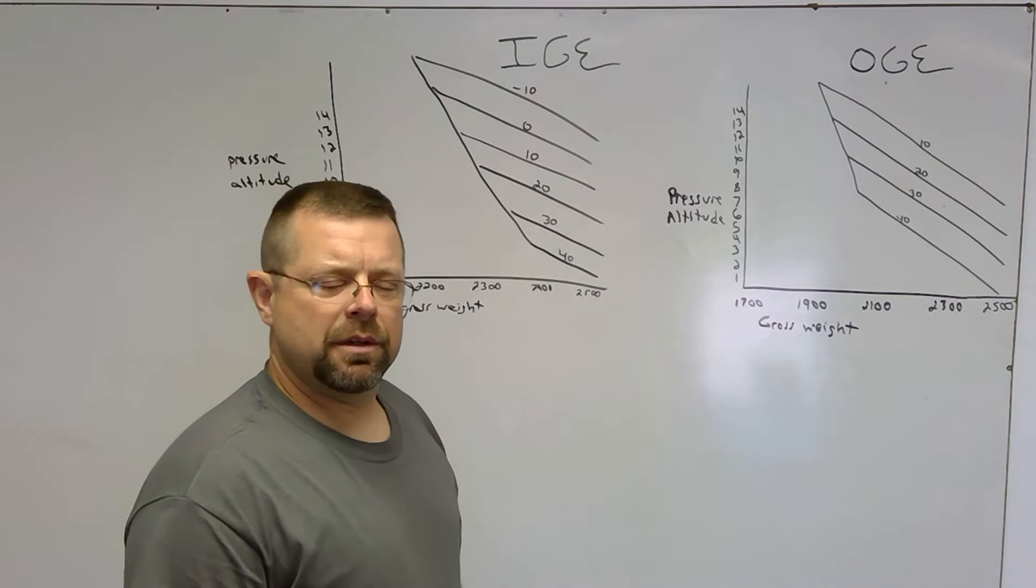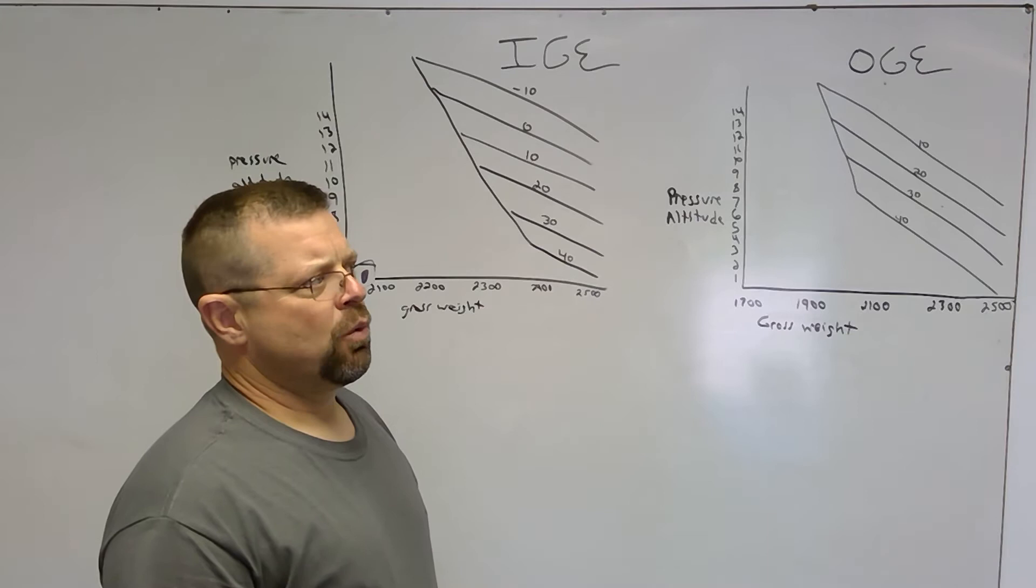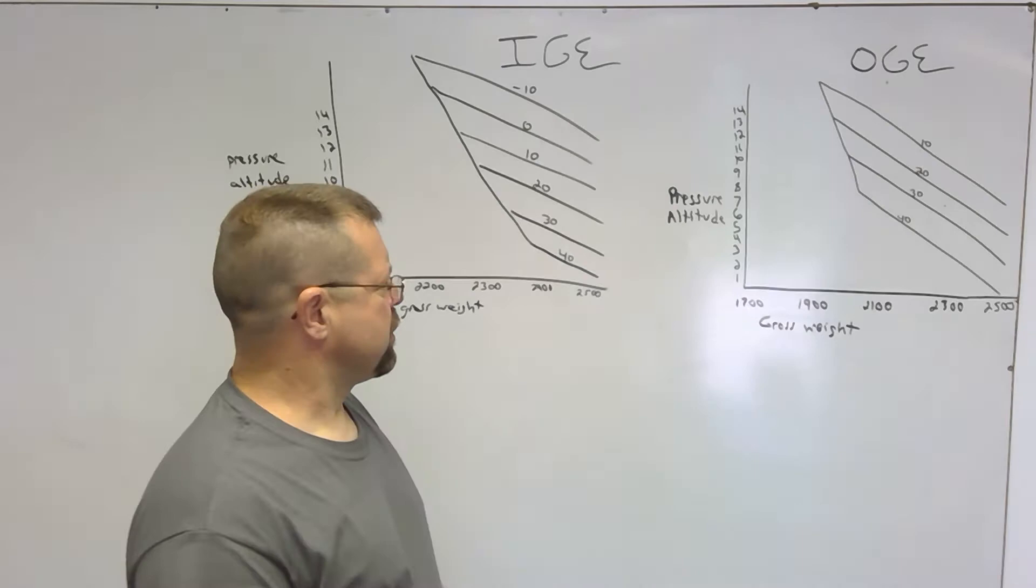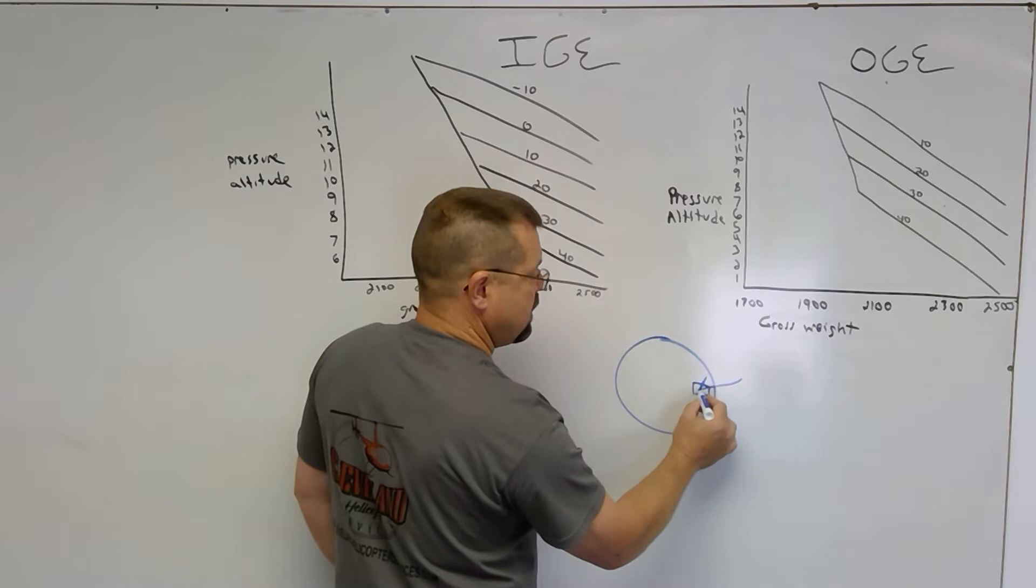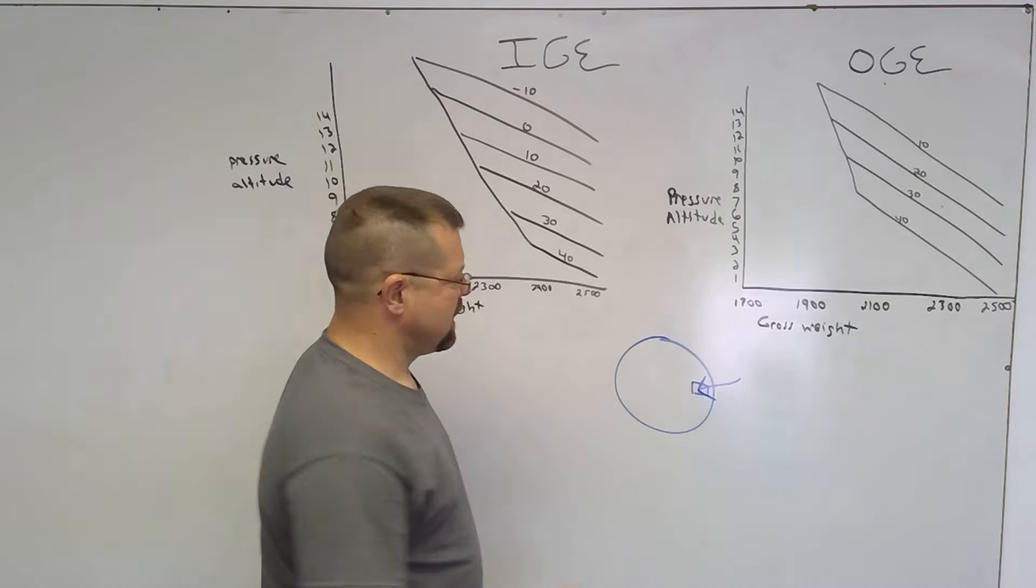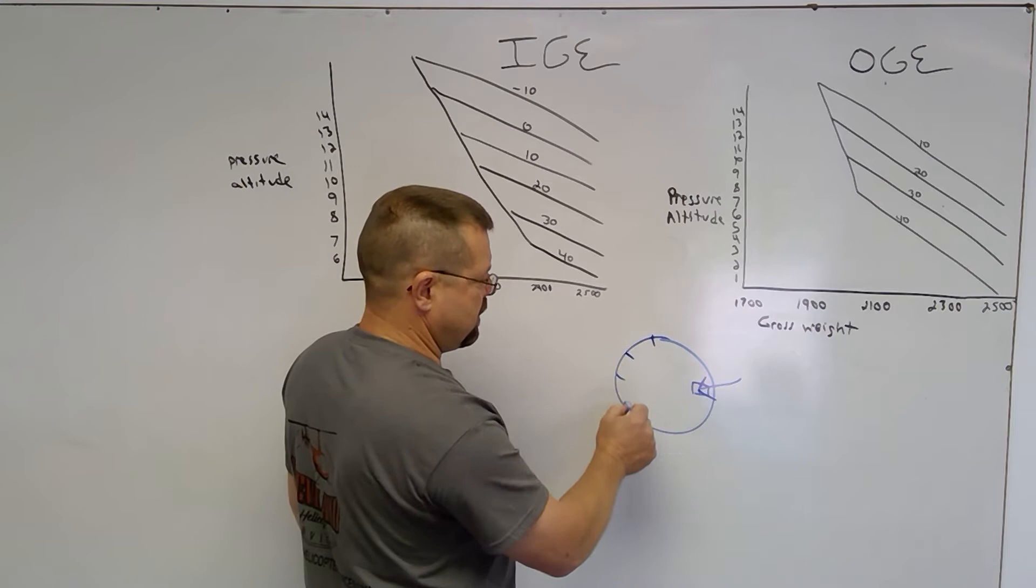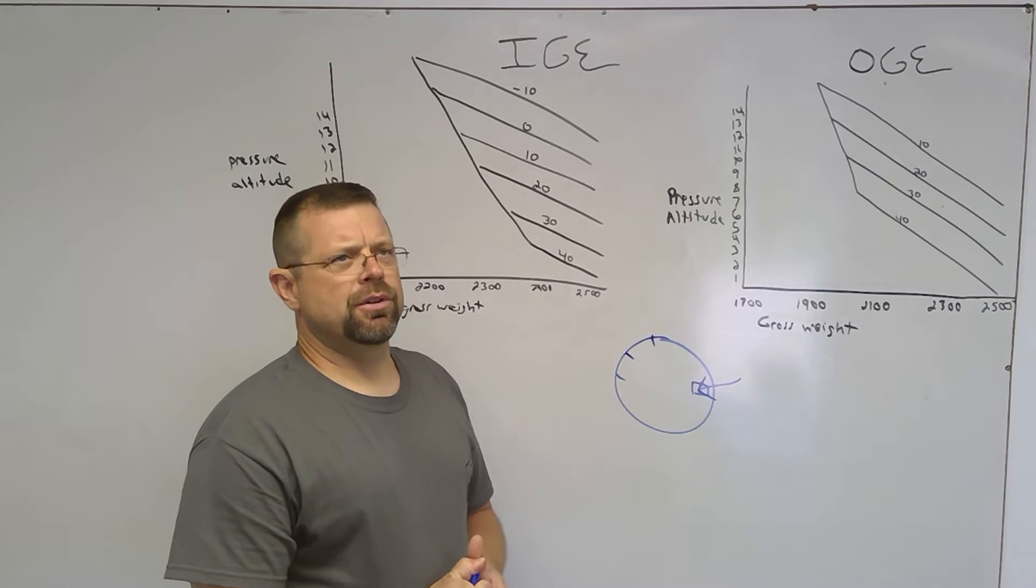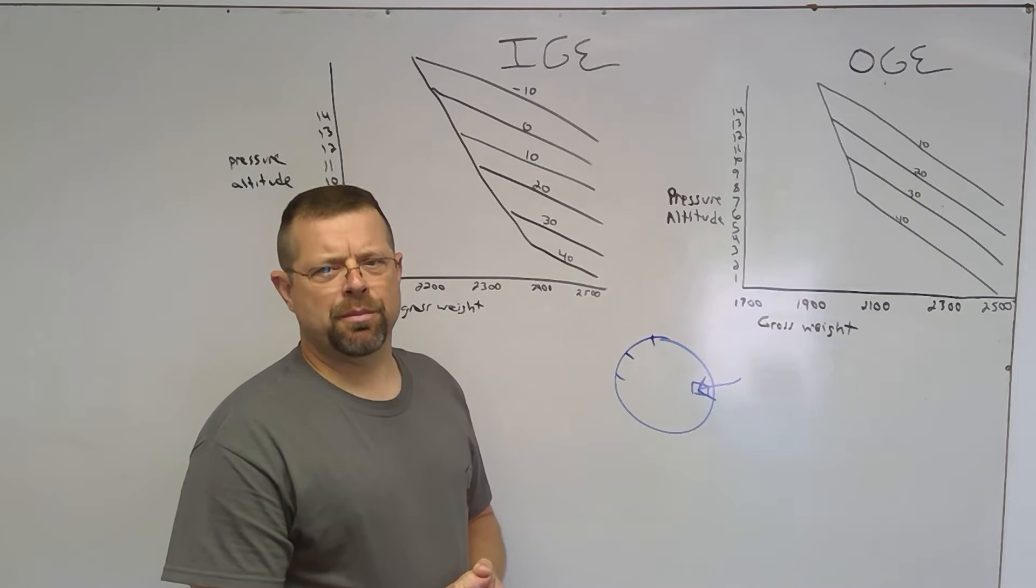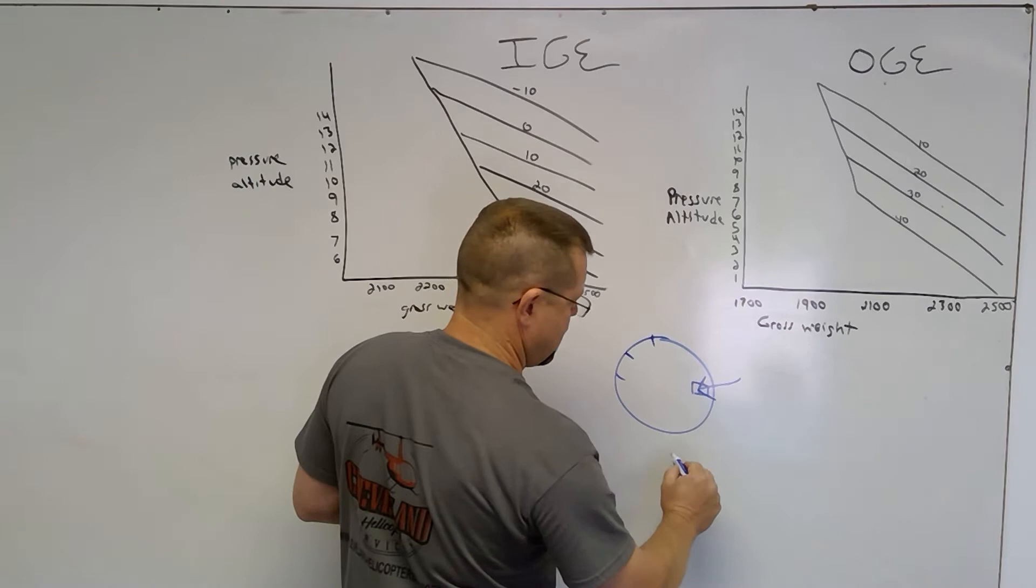To start with, pressure altitude is basically what you get when you put 29.92 in the Kollsman window. In other words, on your altimeter you've got the little window off to the side where you would put 29.92 in, and the correlating altitude would be your pressure altitude. Another way to understand it is pressure altitude is a performance altitude given non-standard barometric pressure. Standard barometric pressure is 29.92.